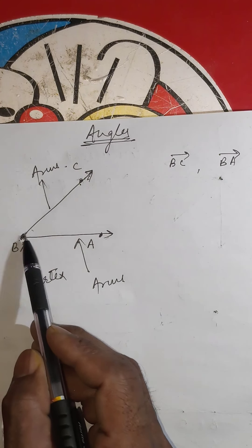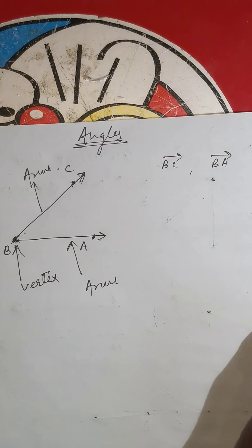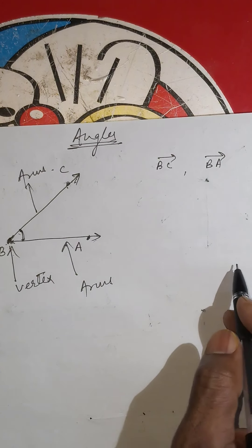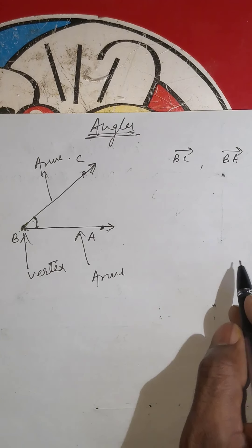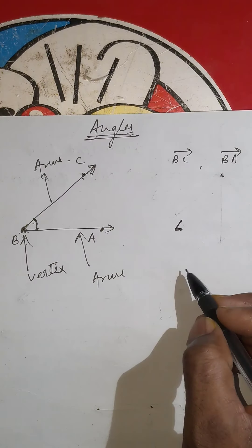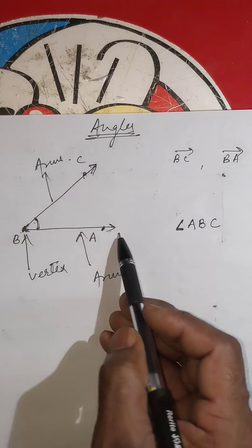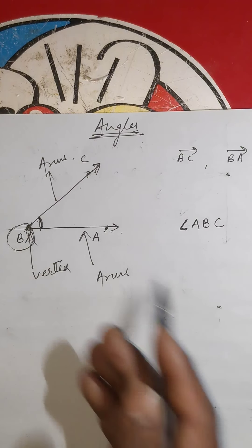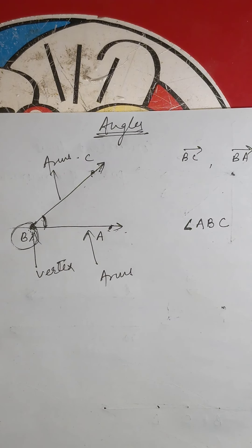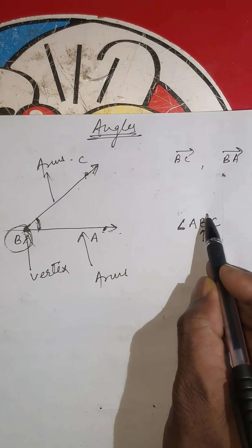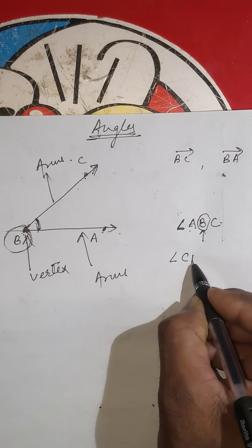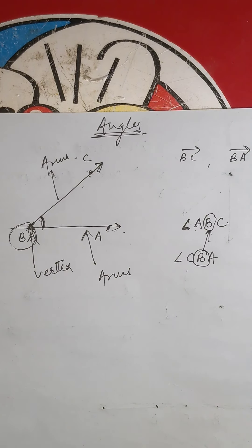The common end point B is the vertex. When representing this angle, the vertex must always be written in the middle. So the angle is written as angle ABC or angle CBA — in both cases, B must be in the middle, as it is the vertex where the two rays meet.